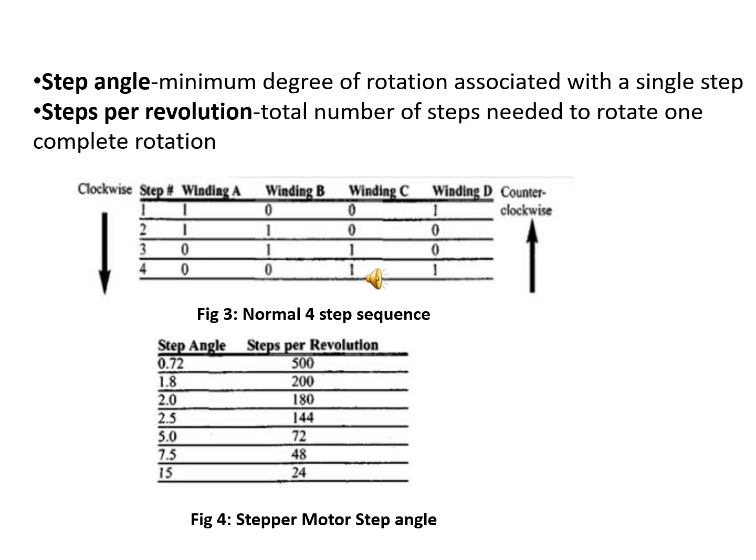Next, we define some terms related to the stepper motor. The first is step angle — when you apply a single clock pulse, what is the minimum degree of rotation covered by the stepper motor for that single step? That is called the step angle. Next is steps per revolution: in order to have a complete 360-degree rotation, how many steps are required? This table shows step angles for different stepper motors. For example, a stepper motor with a step angle of 0.72 degrees requires 500 steps for a full rotation, calculated as 360 divided by 0.72.